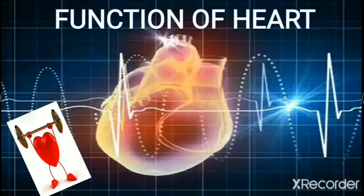Hello dear students, welcome back to your biology class. We are on the chapter Circulatory System. In Part 1, you learned about the three main components: blood, blood vessels, and the pumping organ heart. I explained the main cells and composition of blood, the types of blood vessels, and the human heart structure. Today we are going to start with the function of the heart.